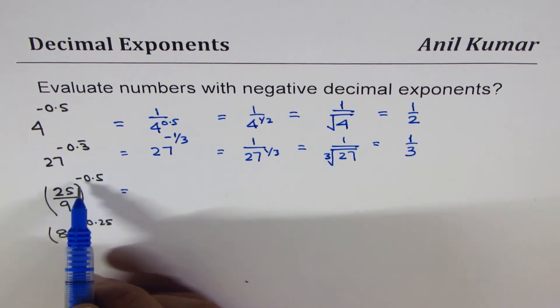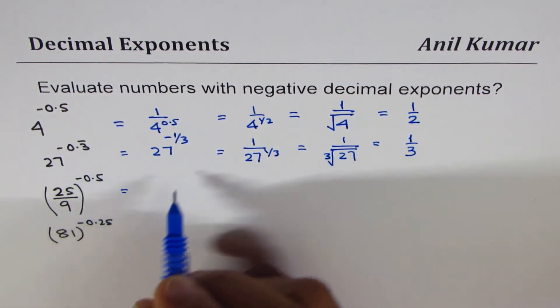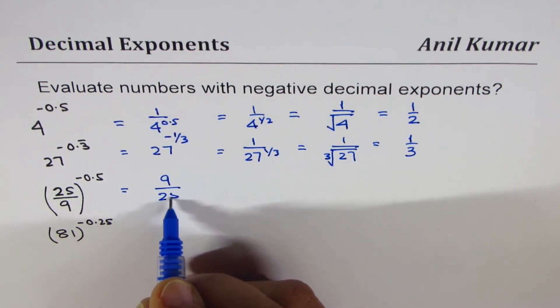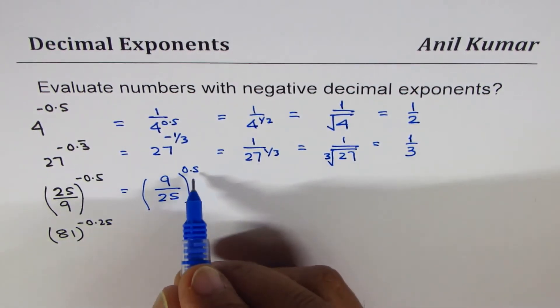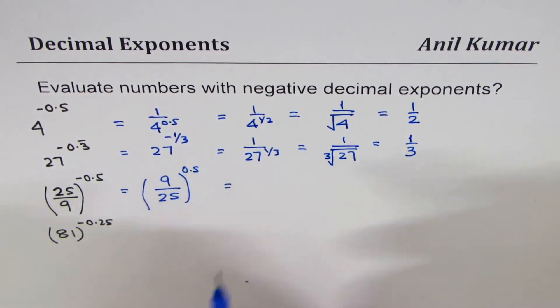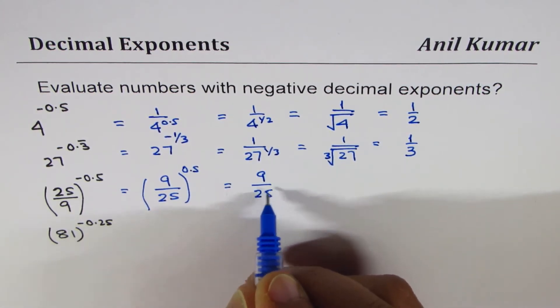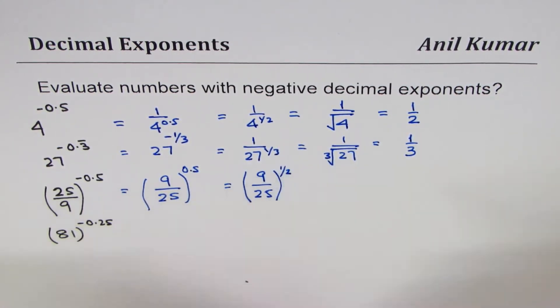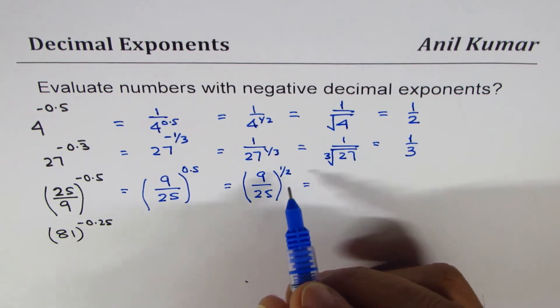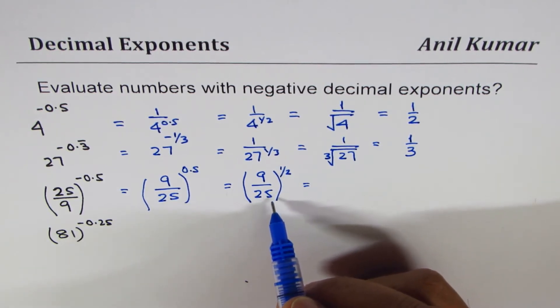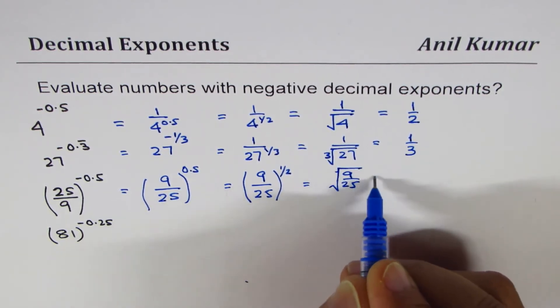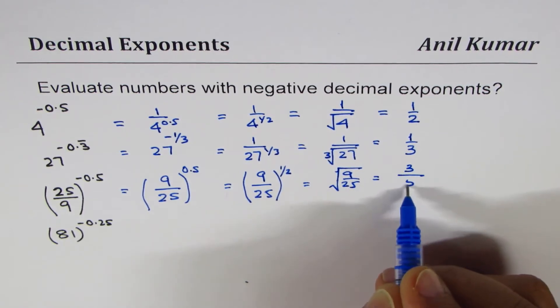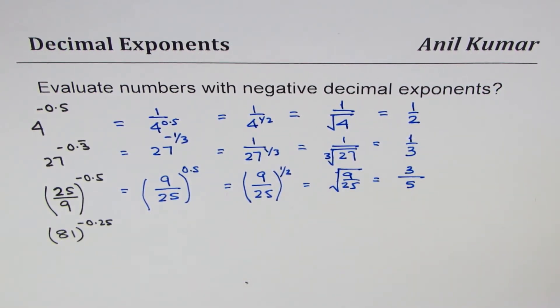Minus 0.5: minus makes this fraction flipped. For example, this will become 9 over 25 and the power, instead of minus 0.5, can now be written as 0.5, and that is square root. So at times it is important to convert decimals to fractions and then move ahead to find the power of a number. So this is square root of 9 over 25. Square root of 9 is 3 and that of 25 is 5, so that becomes our answer.